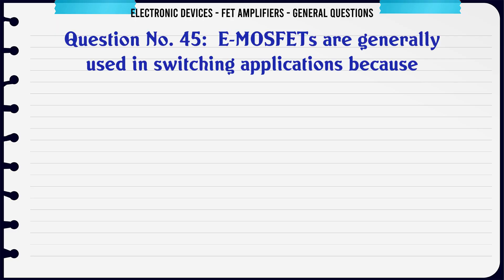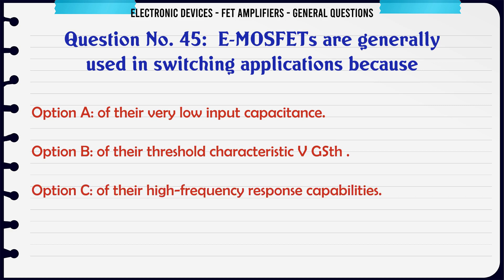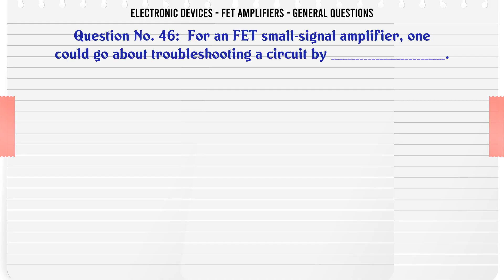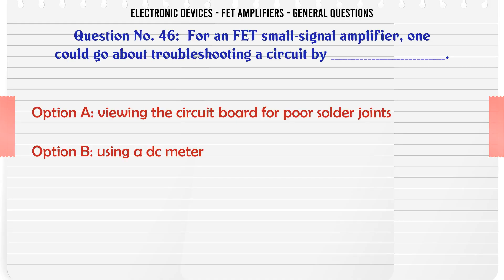E-MOSFETs are generally used in switching applications because: A. Of their very low input capacitance. B. Of their threshold characteristic VGSTH. C. Of their high frequency response capabilities. D. Of their power handling. The correct answer is of their threshold characteristic VGSTH.